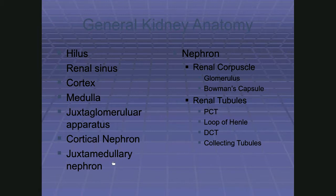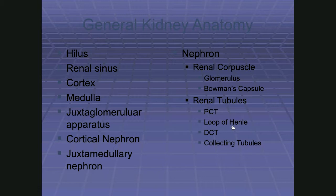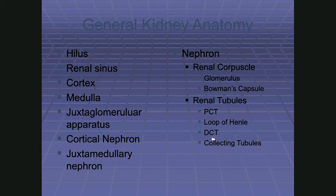By the time we've gone through the PCT and loop of Henle, we've reabsorbed about 85% of the fluid. At the distal convoluted tubule (DCT), we keep reabsorbing water and whatever else we can, but the primary function of the DCT is secretion — the main site for getting bad stuff that wasn't filtered back into the tubular fluid so it will leave with the urine.